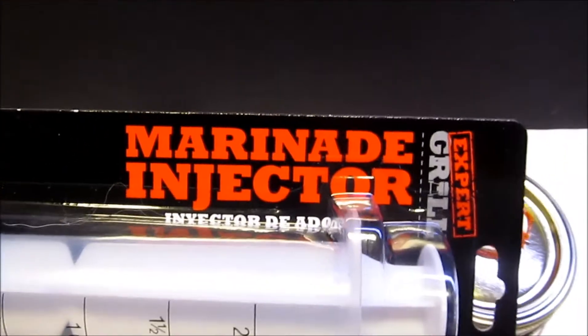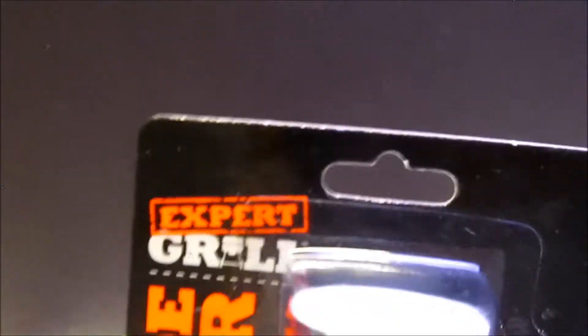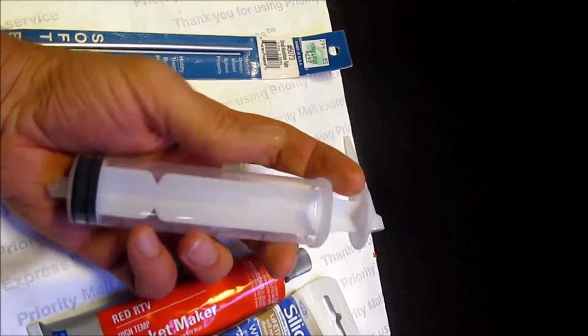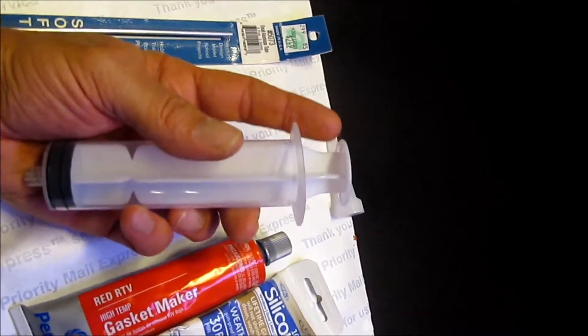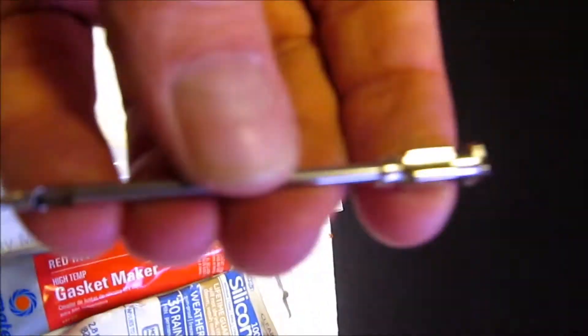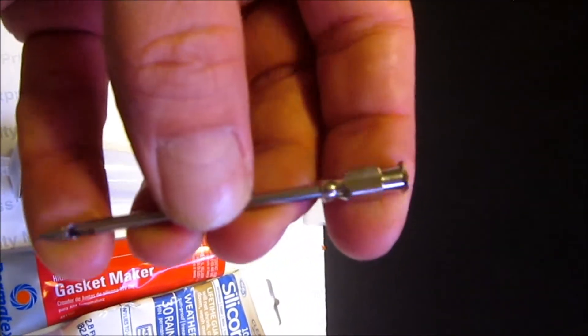The marinade injector from Walmart, in the barbecue aisle, 88 cents. Not only is it a giant 60cc syringe that'll go through the pressure cooker, it also comes with a really big needle that has a lot of uses. We'll get to that too.